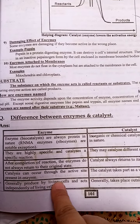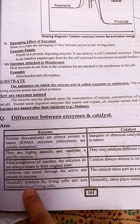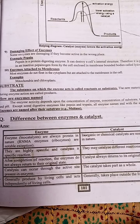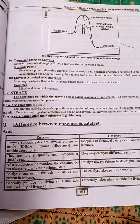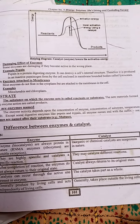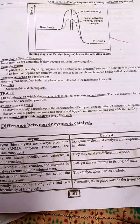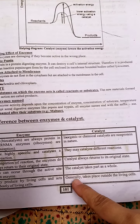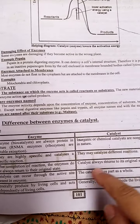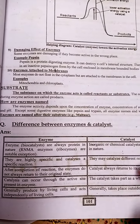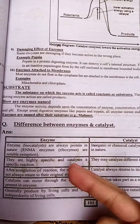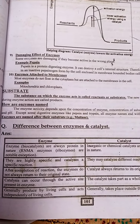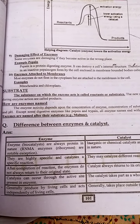Enzymes are generally produced by living cells and can act independently of the living cells, for example in locations like mitochondria and chloroplasts. Chemical catalysts generally function outside the living cells. These are the two main differences. That wraps up today's lecture. Allah Hafiz. Thank you.